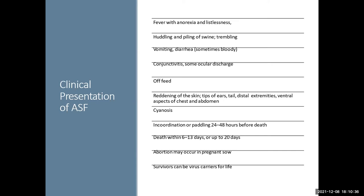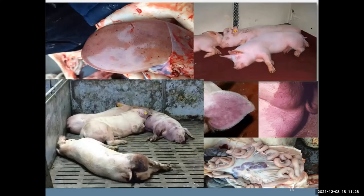Clinically, you get fever with anorexia and listlessness, huddling, piling of swine, vomiting and diarrhea, conjunctivitis, reddening of the skin and extremities, cyanosis, and it can progress to incoordination and paddling. Death can be within six to thirteen days, but it can be prolonged up to twenty days, so it can have a slow spread and slower mortality. It can cause abortion in pregnant sows, and pigs that survive the initial infection can be virus carriers for life.